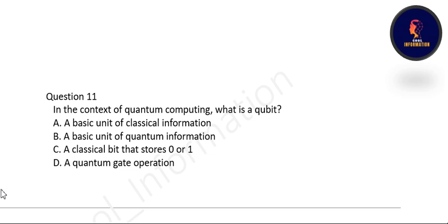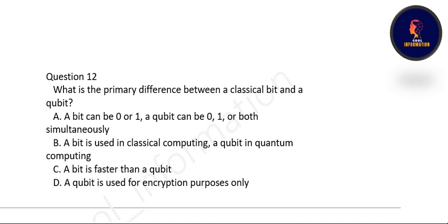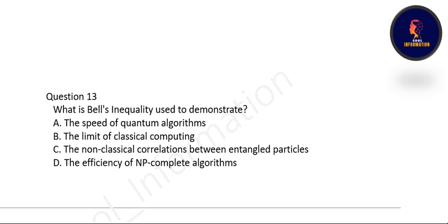Next question: in the context of quantum computing, what is a qubit? A qubit is a basic unit of quantum information. Option B is correct. Next question: what is the primary difference between a classical bit and a qubit? A bit can be 0 or 1, but a qubit can be 0, 1, or both simultaneously. Option A is correct. Next question: what is Bell's inequality used to demonstrate? Bell's inequality is used to demonstrate the non-classical correlation between entangled particles. Option C is correct.